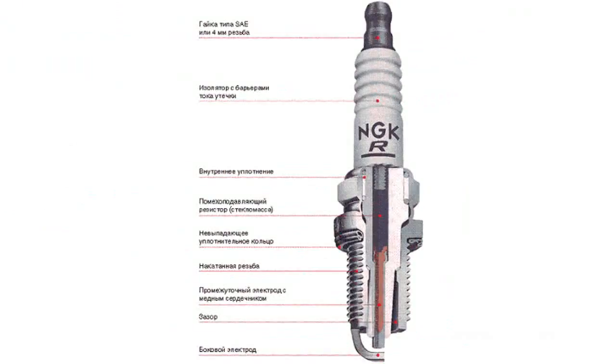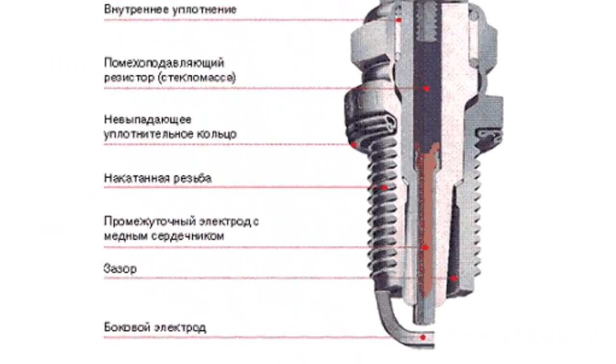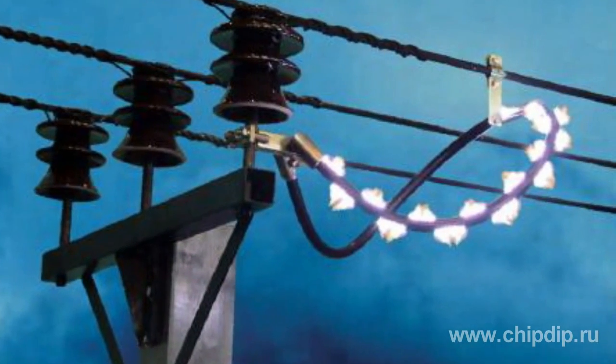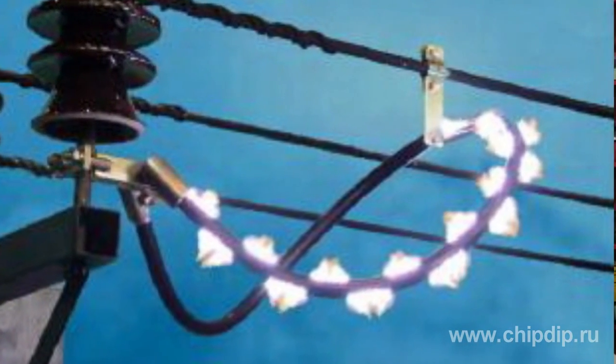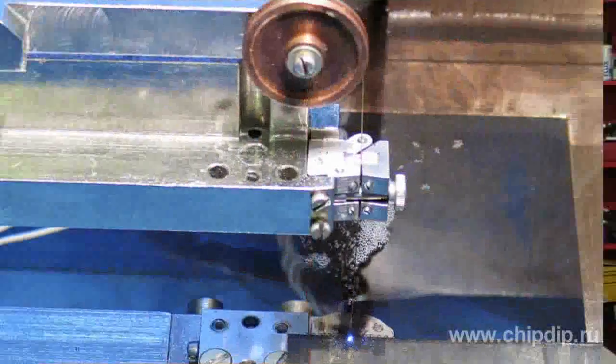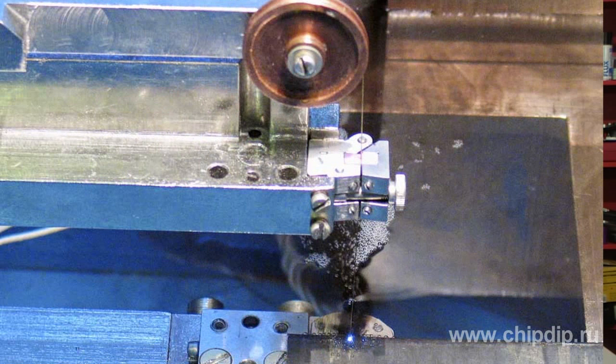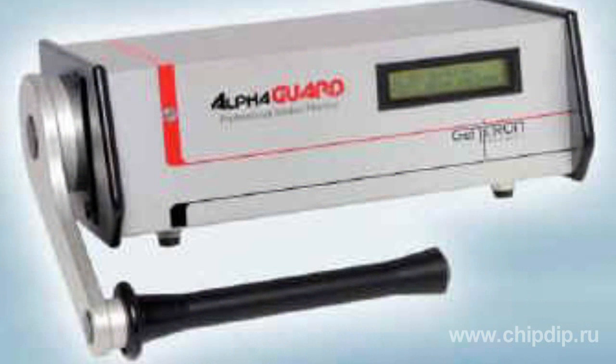A spark discharge is used to ignite a combustible mixture in internal combustion engines and to protect electric power lines against overvoltage — in this case, spark arresters are used. A spark discharge with a short discharge gap length causes erosion of metal surfaces, which is why it is used in electrospark metal working operations such as high-precision cutting and boring. Spark counters are also used in spectrum analysis for registering charged particles.